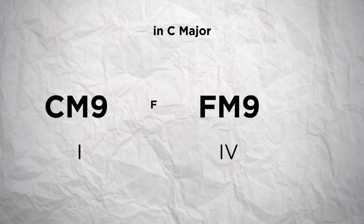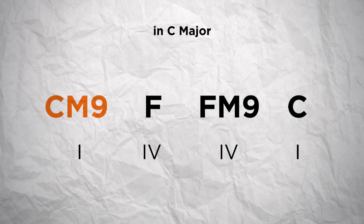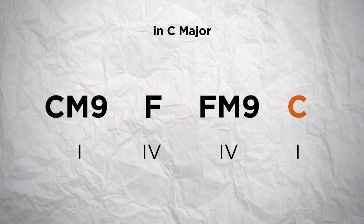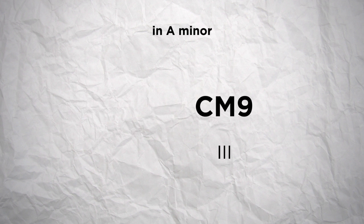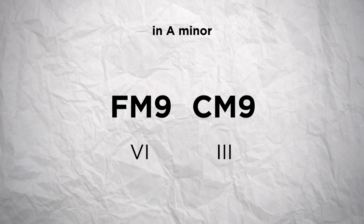So in the tonality of C major, that would mean using an F major 9th for the 4th degree, or a C major 9th for the 1st degree. As an example, we can try a chord progression that goes from 1 to 4 and then 4 to 1. Or in the tonality of A minor, we can use a C major 9th chord on the 3rd degree or an F major 9th chord on the 6th degree, so you could make this chord progression.